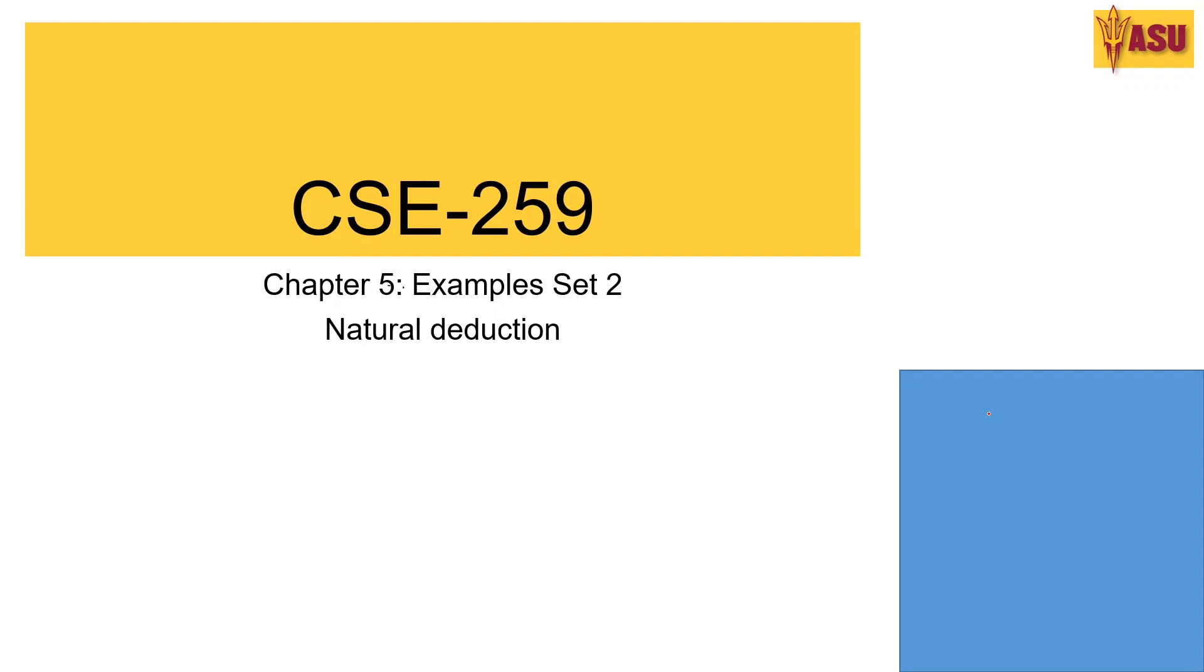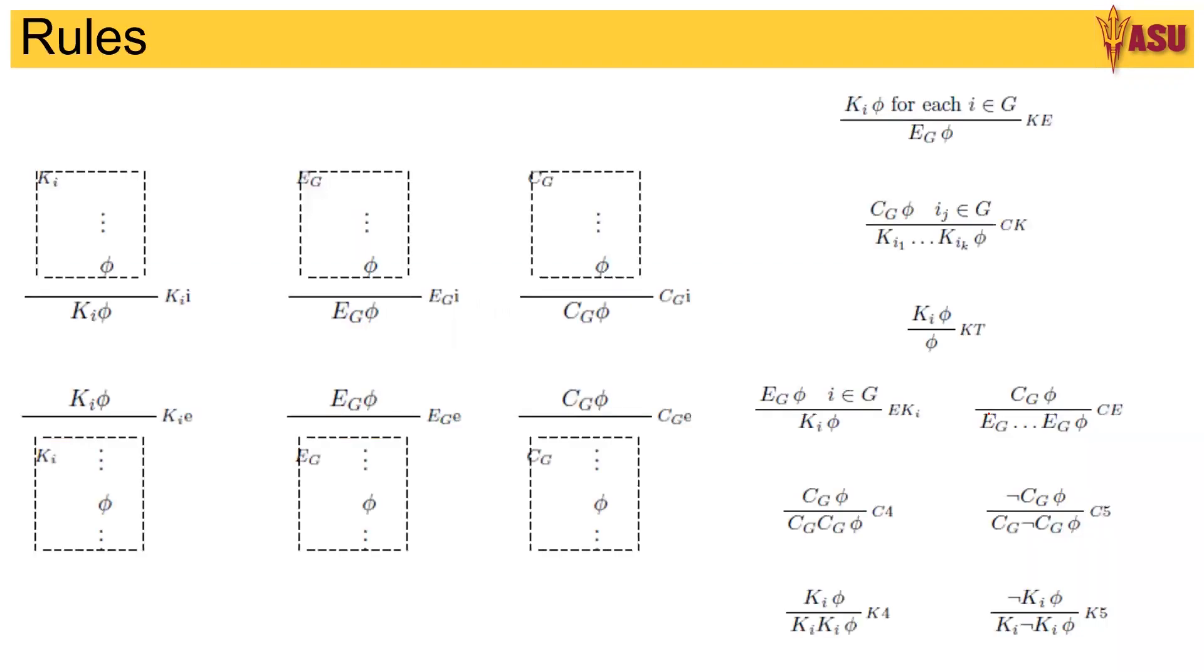We'll see one example, but before we jump into the examples, a quick review of the rules. Given an agent k, if you are able to deduce phi, then we can say k satisfies phi. That's the rule of introduction. The rule of elimination is given that an agent ki knows phi, then we can justify phi given ki assuming ki.